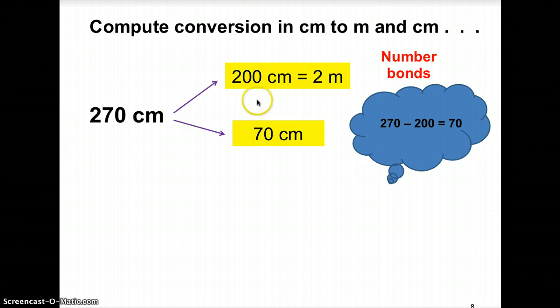And remember, 100 cm, the formula, 100 cm is equals to 1 meter. So, 200 centimeters must be equals to 2 meters. So, 200 centimeters and 70 centimeters will give you 270 centimeters. So, how do you write it down properly in number sentences?